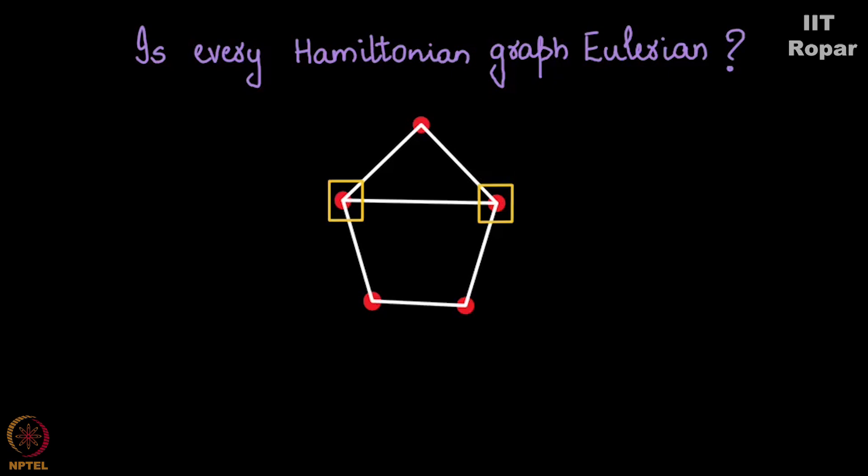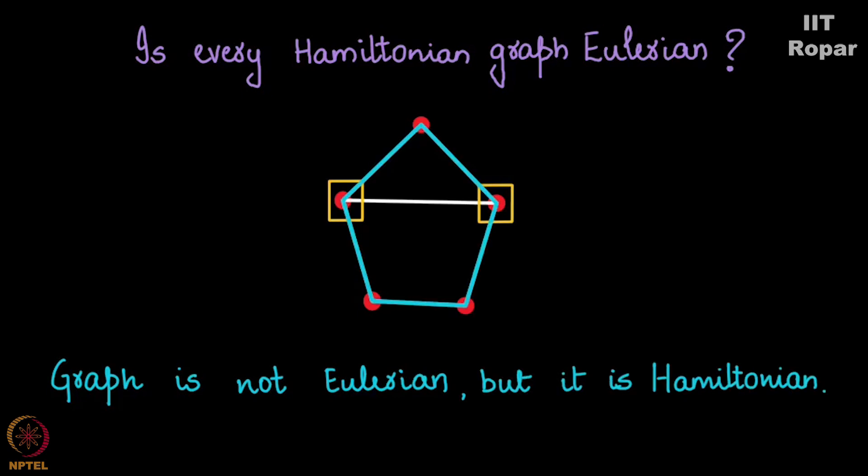Definitely the graph is not Eulerian, but it is Hamiltonian. Very obvious, there is a cycle here. So this is an example of a graph which is Hamiltonian but not Eulerian.